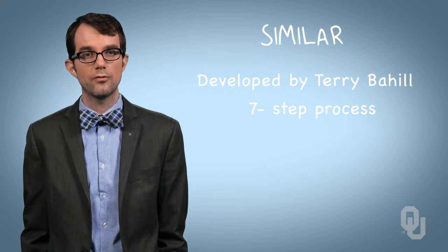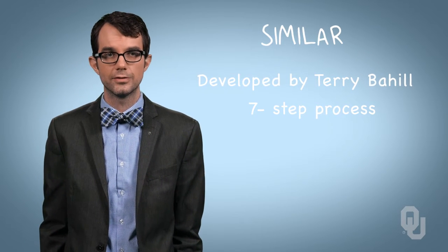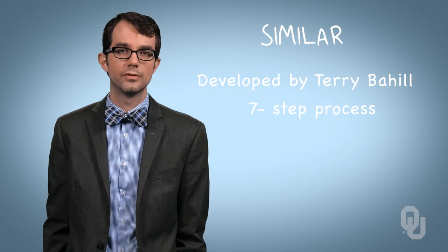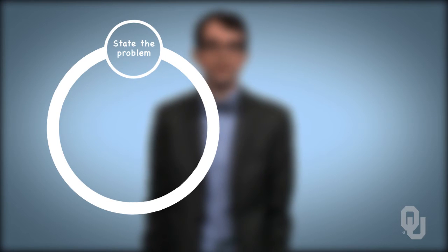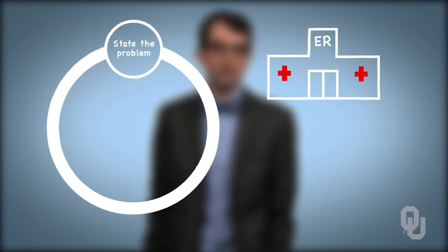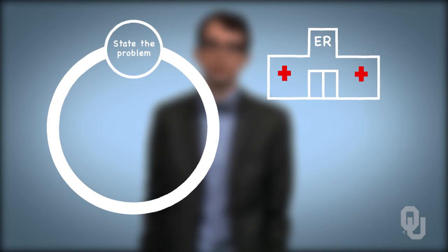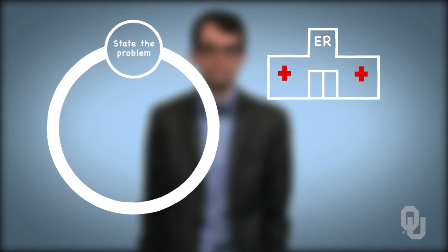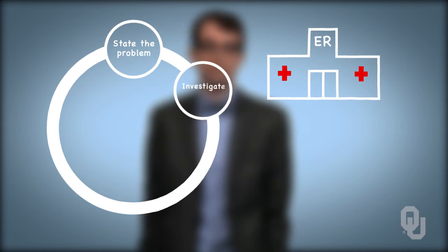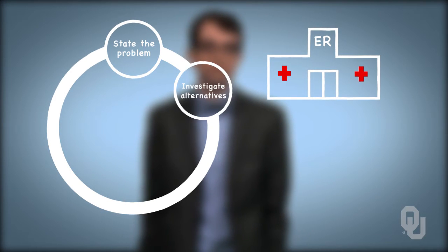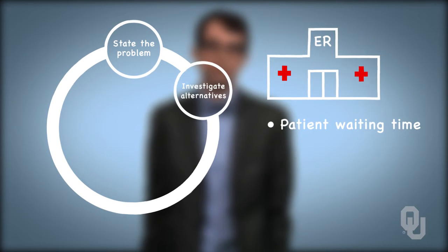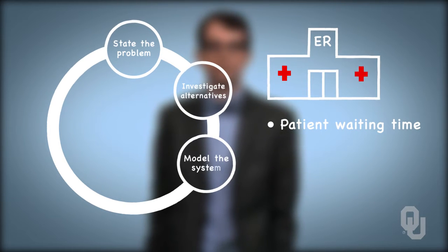I'm an industrial engineer, so I often think about service-oriented systems. As such, let's use an emergency room design example to illustrate the SIMILAR process. The process starts with stating the problem, or identifying the issue that needs to be addressed. For our ER example, the problem might be that customers are waiting too long before they are being treated. The next step deals with investigating different system alternatives that may address that initial problem. In this step, we identify how we might measure the performance of alternative designs to make a comparison. In our case, patient waiting time is a good variable to measure, and there may be several others. Then we model the performance of those different alternative systems.